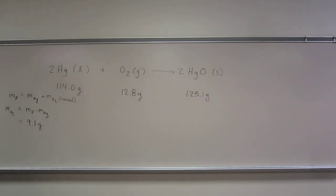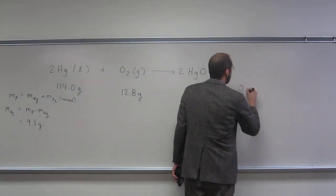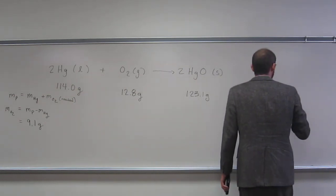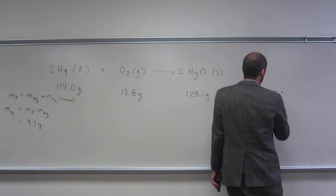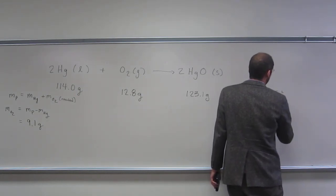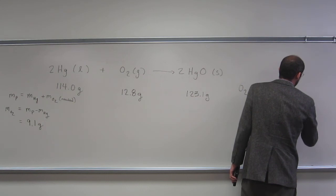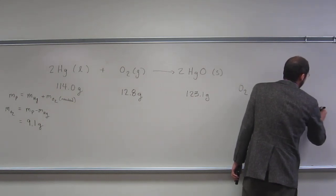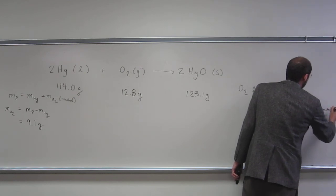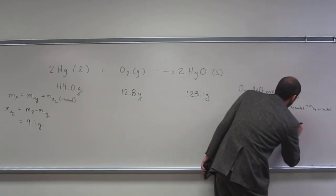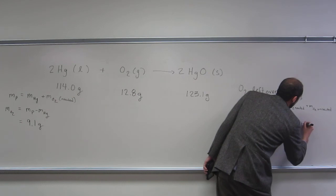You're going to take that from the 12.8 and figure out how much is left over. Oxygen left over or unreacted - mass of O2 total is going to be the mass of O2 reacted plus the mass of O2 unreacted. So we know these two, so mass of O2 unreacted is going to be mass total minus mass reacted.